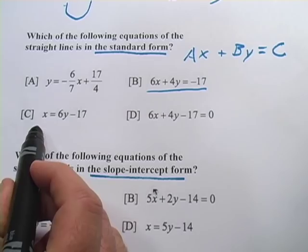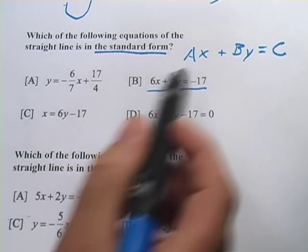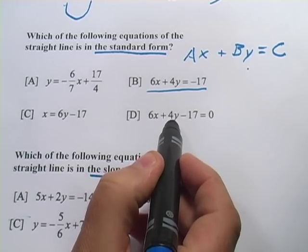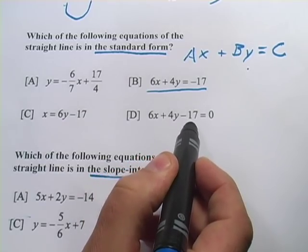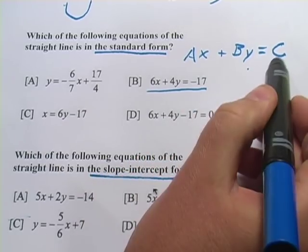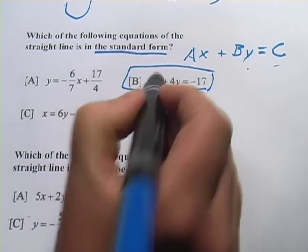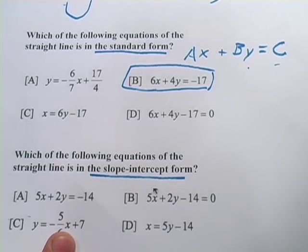In C, we just have the x on the left side. That's not going to work. I need both the x and the y on the left side. Here we have x and y on the left side, but we also have the number on the left side. And in standard form, number needs to be on the right side. So, it looks like B is our correct answer. That's standard form.